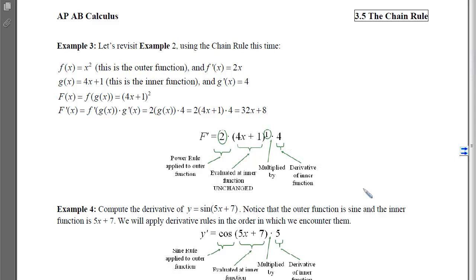If we look at example 4, you can see that that works the same way. I want to compute the derivative of y = sin(5x + 7). So the outer function is the sine, so I'm going to take the derivative of the sine first, that will be the cosine, and then the inside function stays unchanged, and then I multiply it at the back times the derivative of this inner function, which is 5.